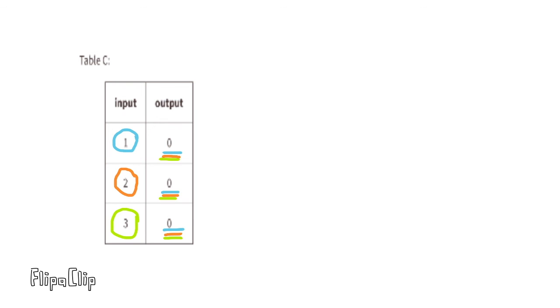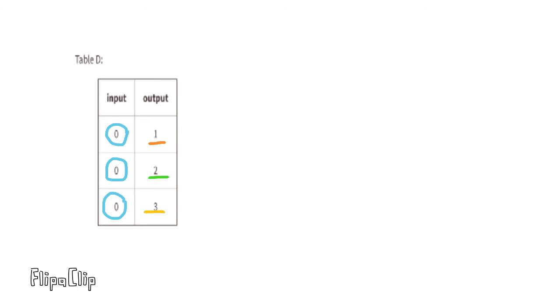All of the inputs for table C are different. All of the outputs for table C are the same, and this is possible. So table C is representing a function rule. Table D. All of the inputs for table D are the same, but all of the outputs for table D are different, and you cannot have different outputs for the same inputs. So table D is not representing a function rule.